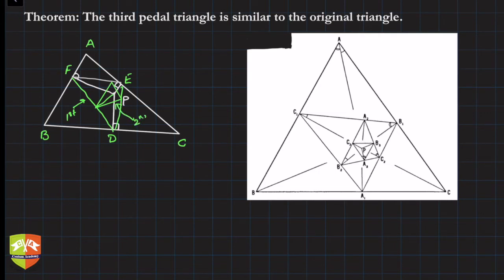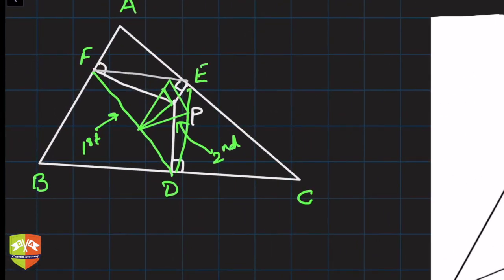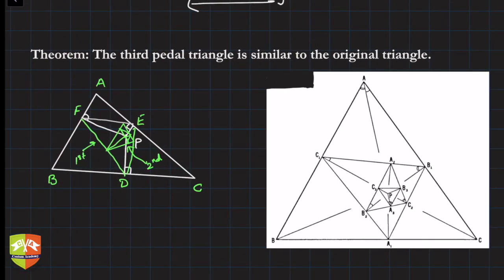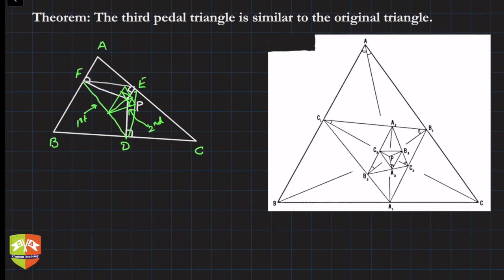By dropping three perpendiculars and repeating the process, we get the first pedal triangle, then the second pedal triangle. If you keep repeating the process — dropping perpendiculars and joining — you keep getting successive pedal triangles. The theorem states that the third pedal triangle drawn will be similar to the original triangle.